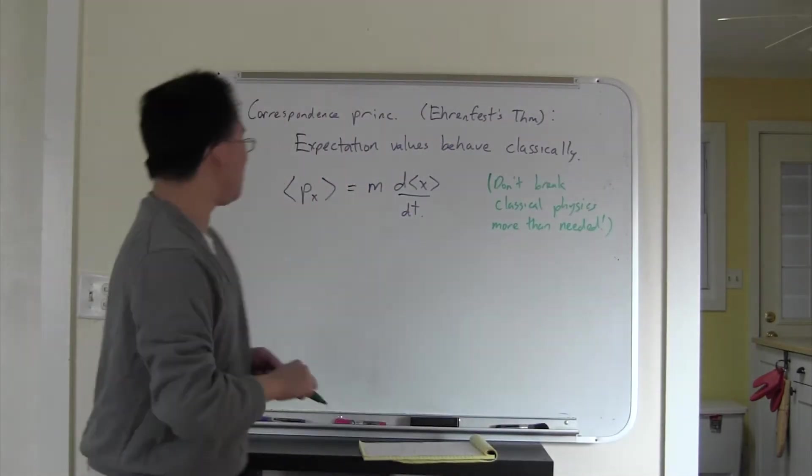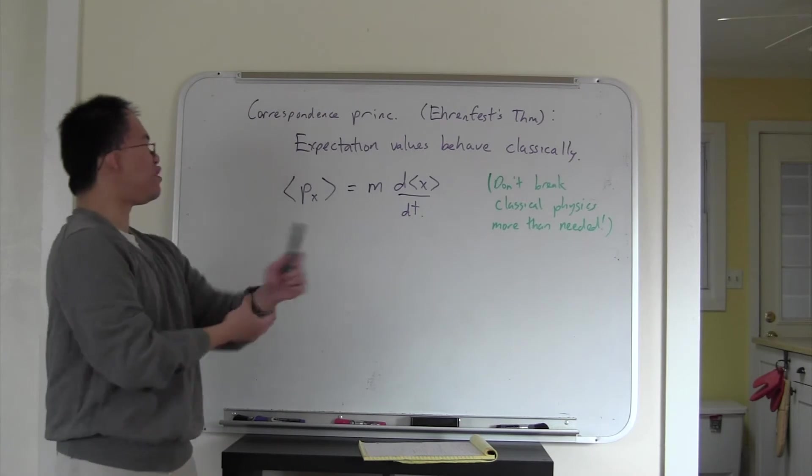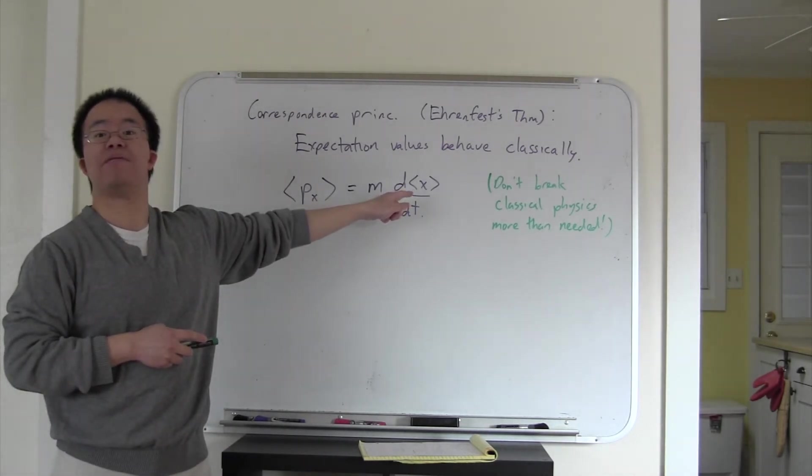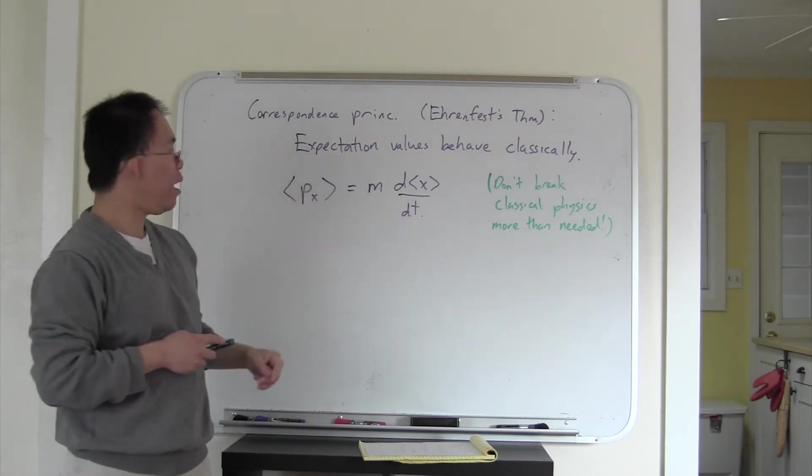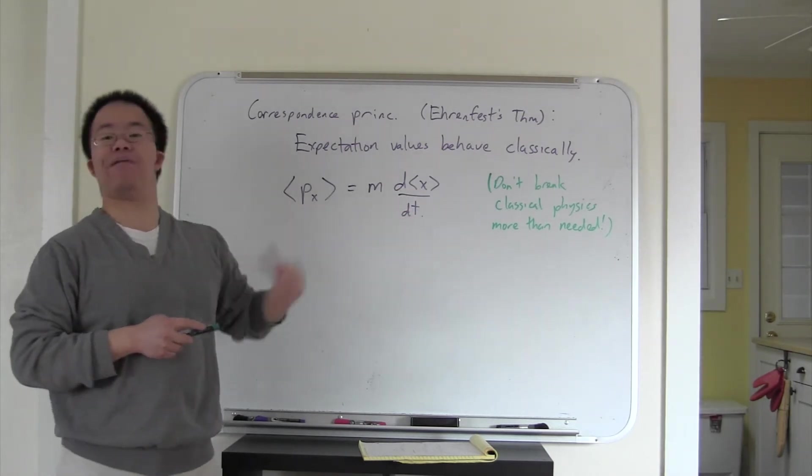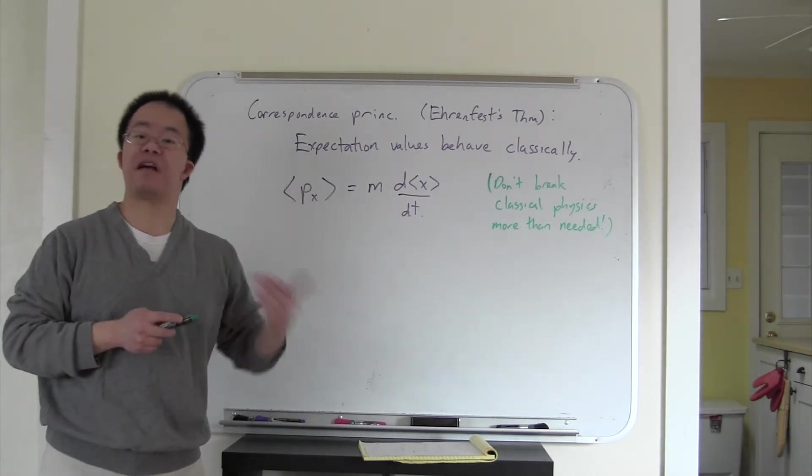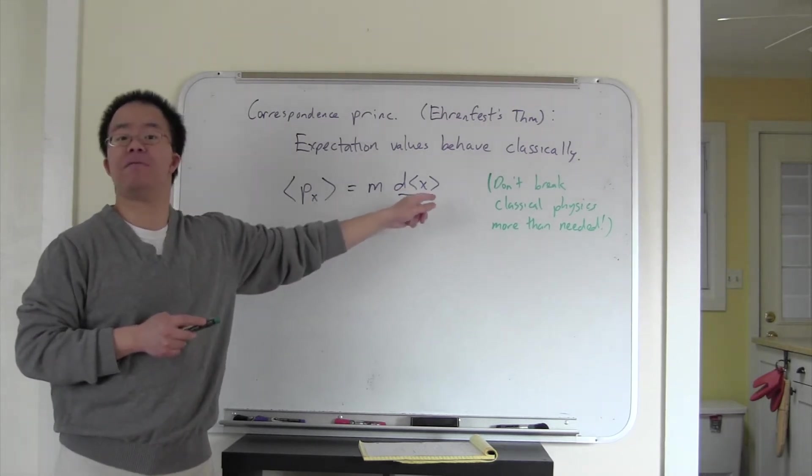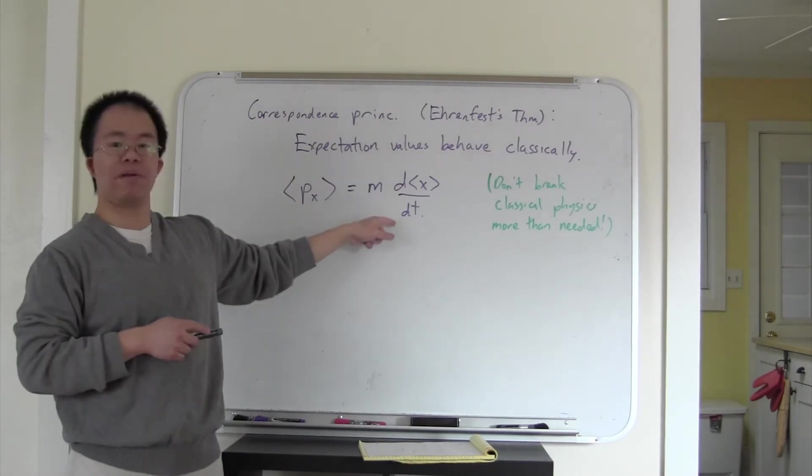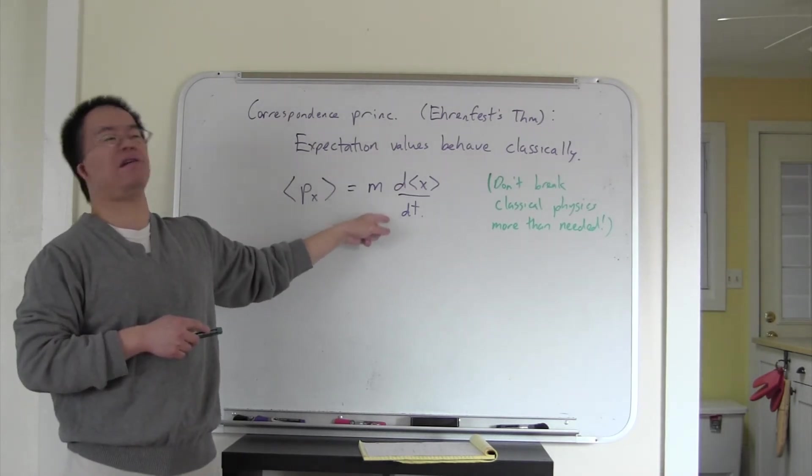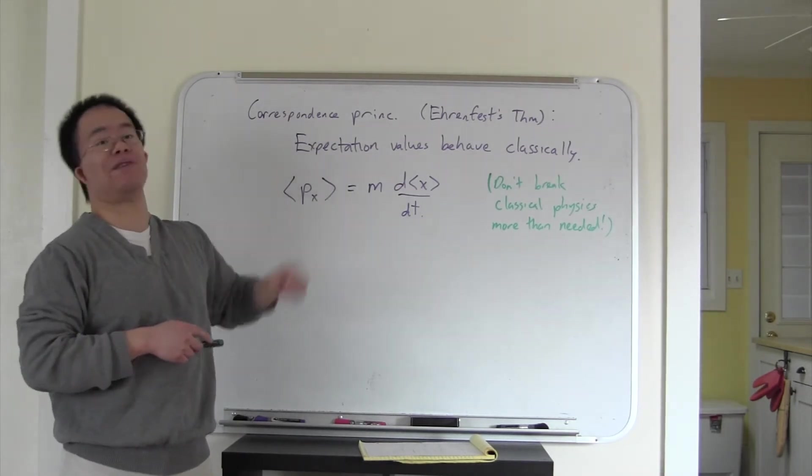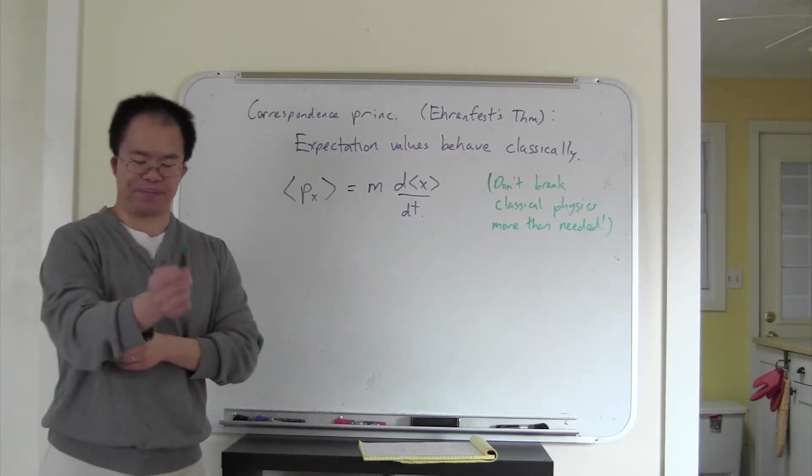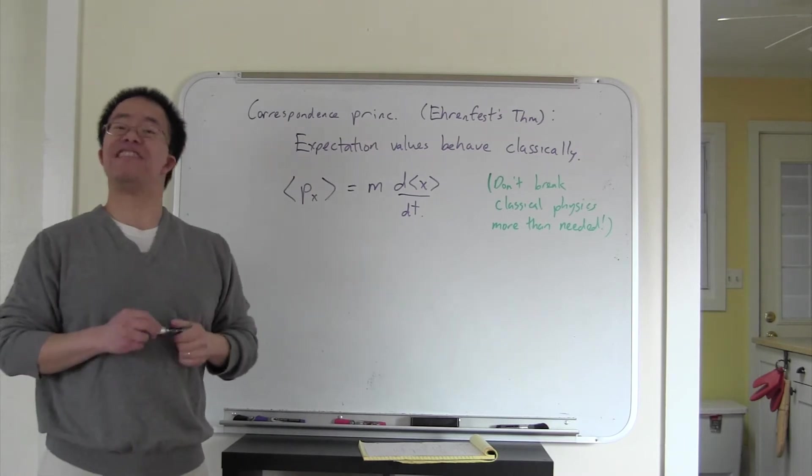Okay, well, this turns out to be good news for us, because we know how to calculate the expectation value of x given a wave function. You might be able to imagine how if the wave function has a time dependence, then the expectation value might also have a time dependence. So in principle, we might be able to calculate this expression over here, and thereby get an expectation value for momentum.